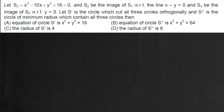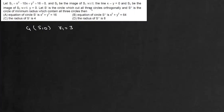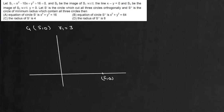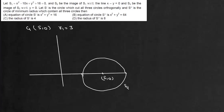Now here the questions: we are given the circle S1 with center at (5, 0) and radius equals 3 units. So it will be this circle, that is S1.